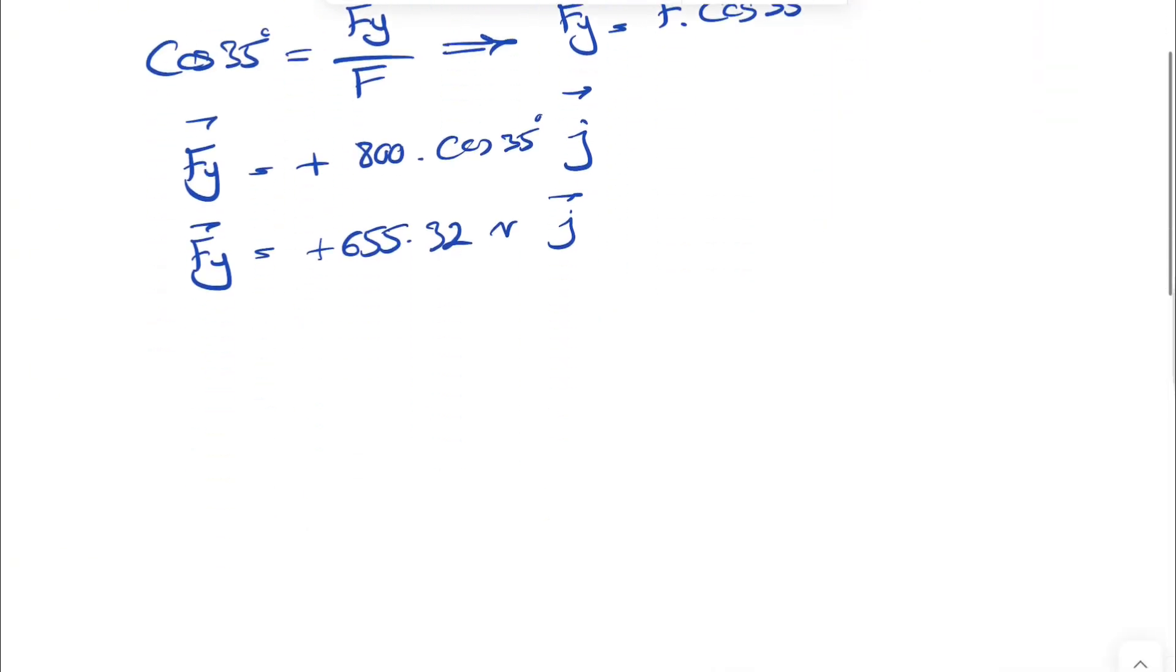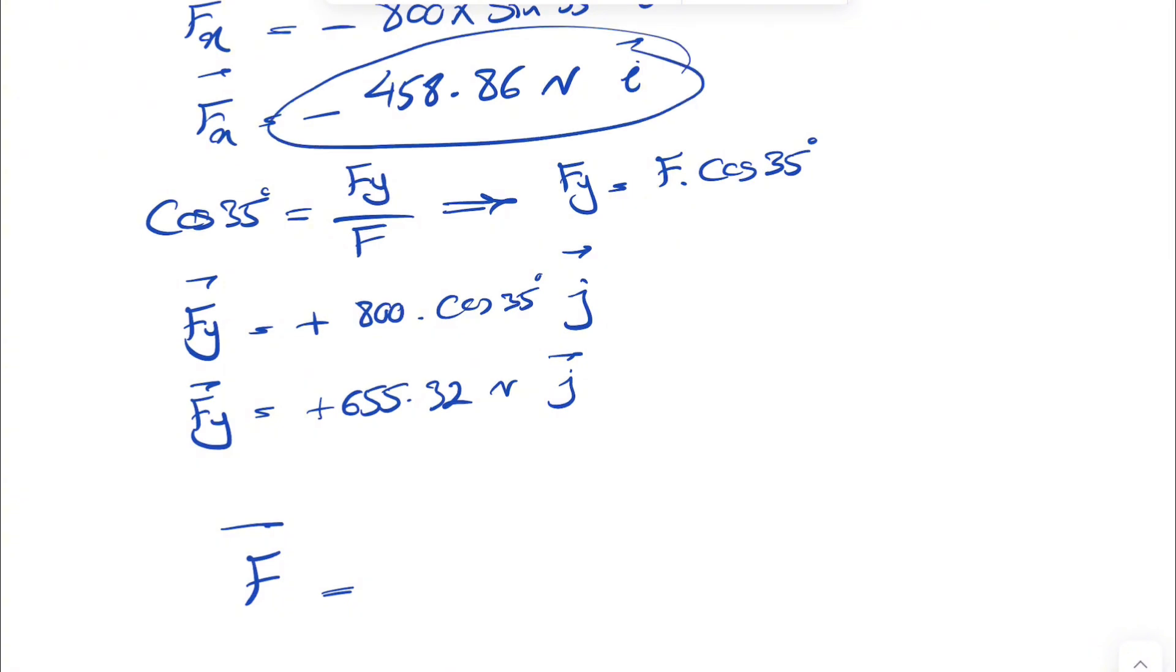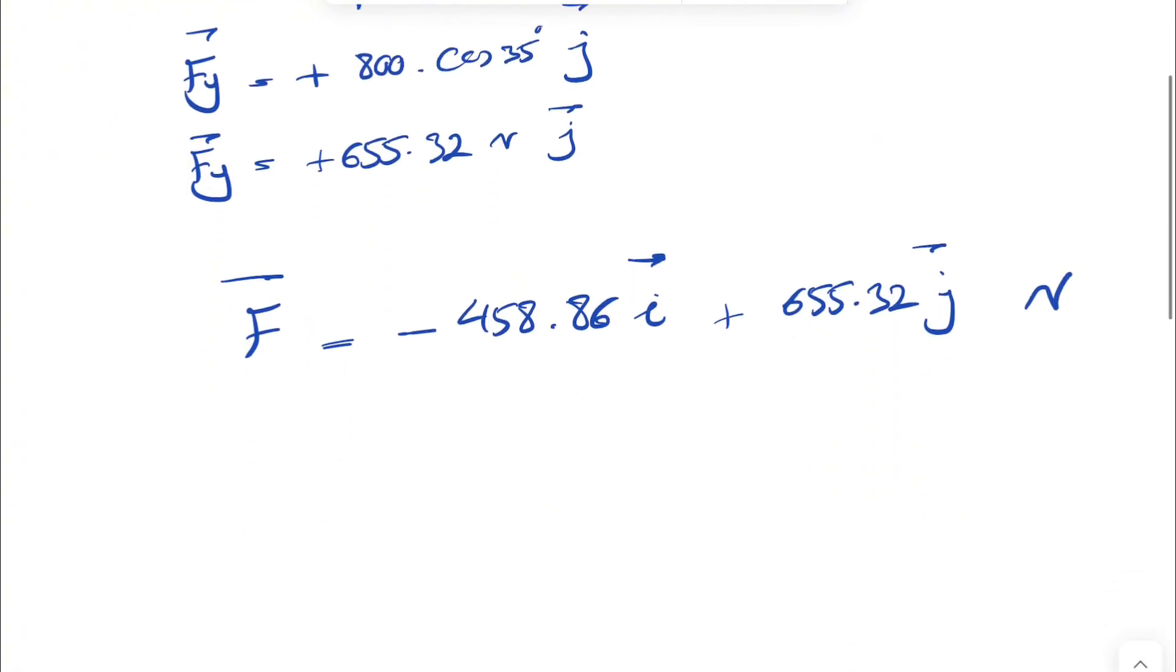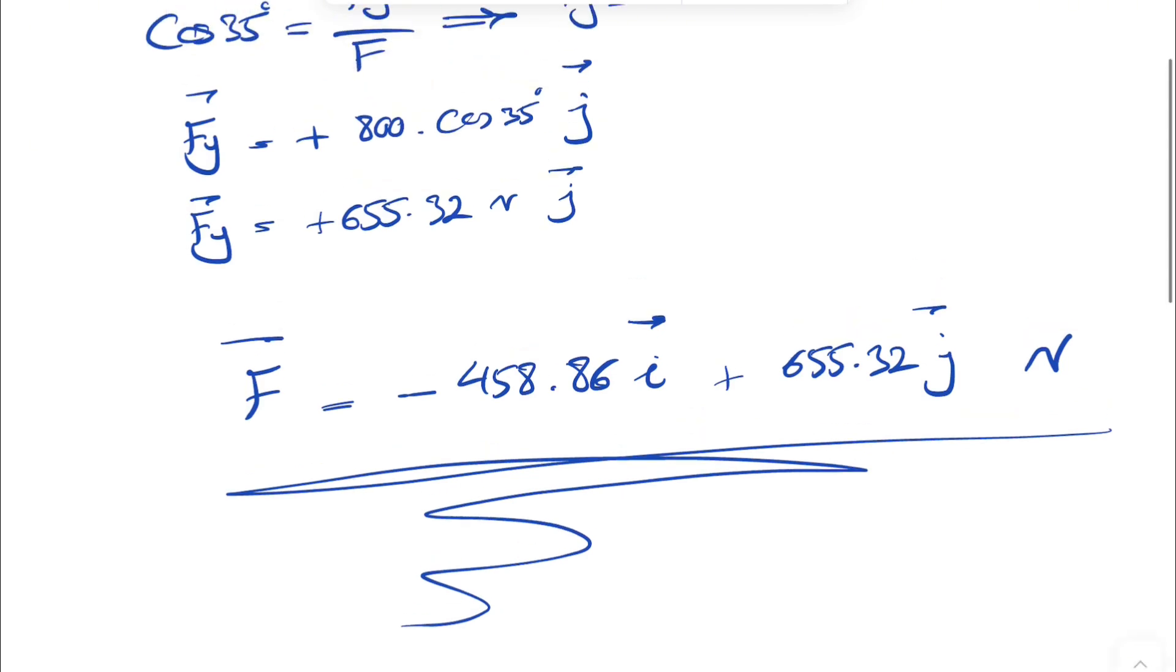If we want to show the final answer for F, we're going to have the x component minus 458.86 i plus 655.32 j, and we show our unit here, which is newtons. That's going to be the final answer for this question.